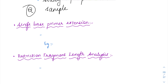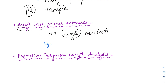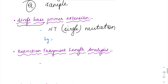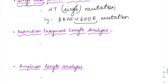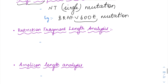The next method is single base primer extension. As the name suggests, it uses a single base. So whenever there is a mutation at a single nucleotide, you can use this method for amplification. For example, we have the BRAF V600E mutation. In this mutation, the mutation is specific at position V600E — at the 600 position, E is going to replace V. So for BRAF V600E mutation you can use single base primer extension to amplify.